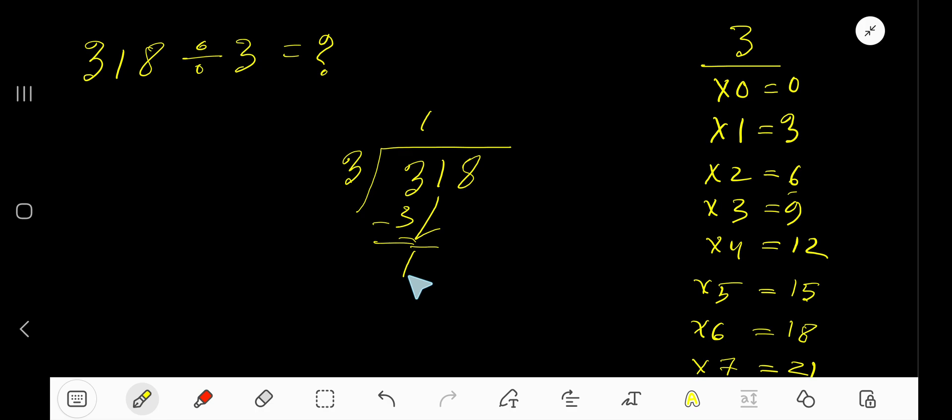3 goes into 1 how many times? 0 times. As our working dividend 1 is less than divisor 3, 0 times 3 gives you 0. Subtract to get 1 and bring down the next digit.